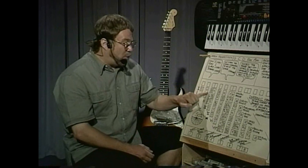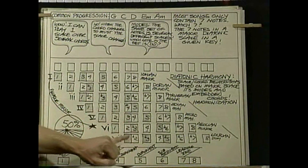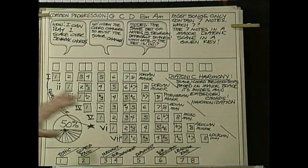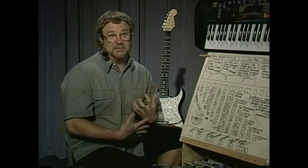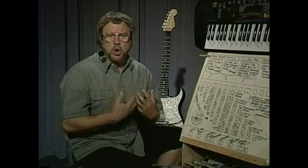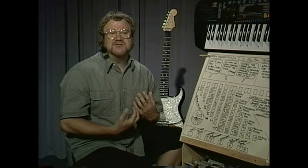The most important set of modes you want to know about are the diatonic modes, because so much of western music, particularly western popular music, is based on this way of thinking. The major scale has seven notes in it, so it also has seven modes. This explains an awful lot about where common chord-scale relationships come from and why we keep seeing the same sets of chords over and over again.